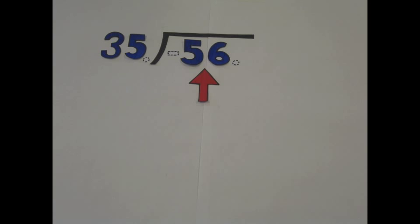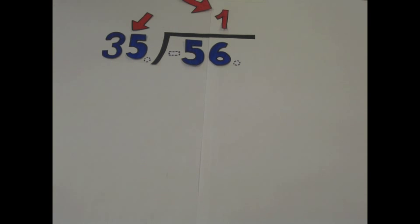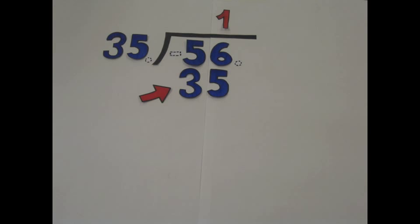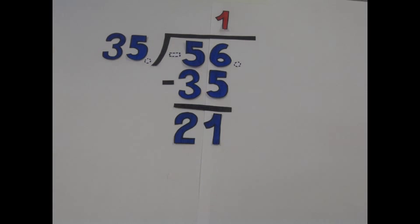Next, you have to divide 56 by 35. 35 goes into 56 once. You write the 1 above the 6. 1 multiplied by 35 equals 35. You write the answer under 56. Then subtract 35 from 56. The answer is 21.